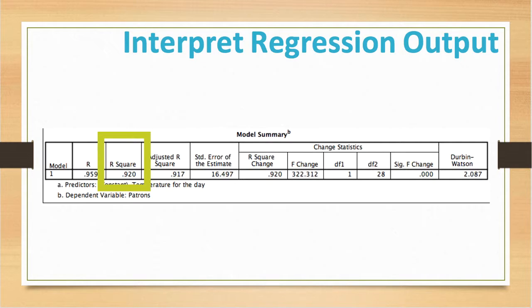We now begin to conclude that we have a good predictor for the number of expected patrons when considering the day's temperature. But this also means that 8% of the variation in the number of patrons cannot be explained by the day's temperature alone. Therefore, there has to be other variables that have an influence.